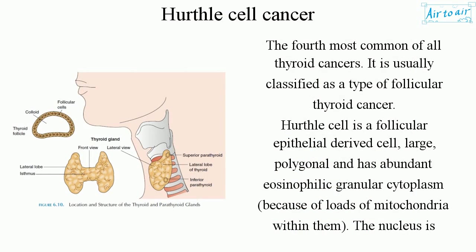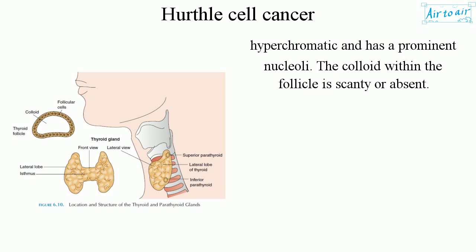Hürthle cell is a follicular epithelial-derived cell, large polygonal, and has abundant eosinophilic granular cytoplasm because of loads of mitochondria within them. The nucleus is hypochromatic and has a prominent nucleoli. The colloid in the follicle is scanty or absent.